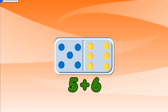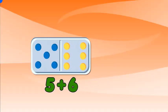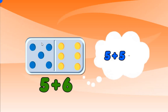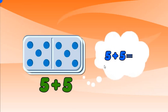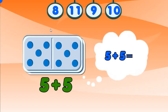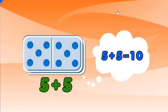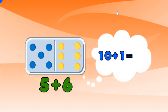I added 5 and 6. I make it simple by thinking double 5 plus 1. What is double 5? I know double 5 is 10, so now I just add 1.